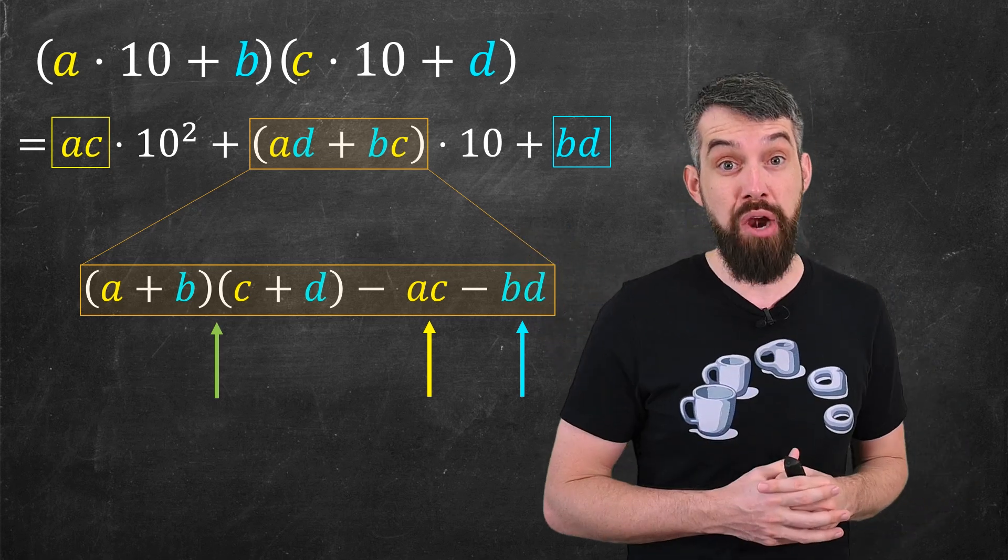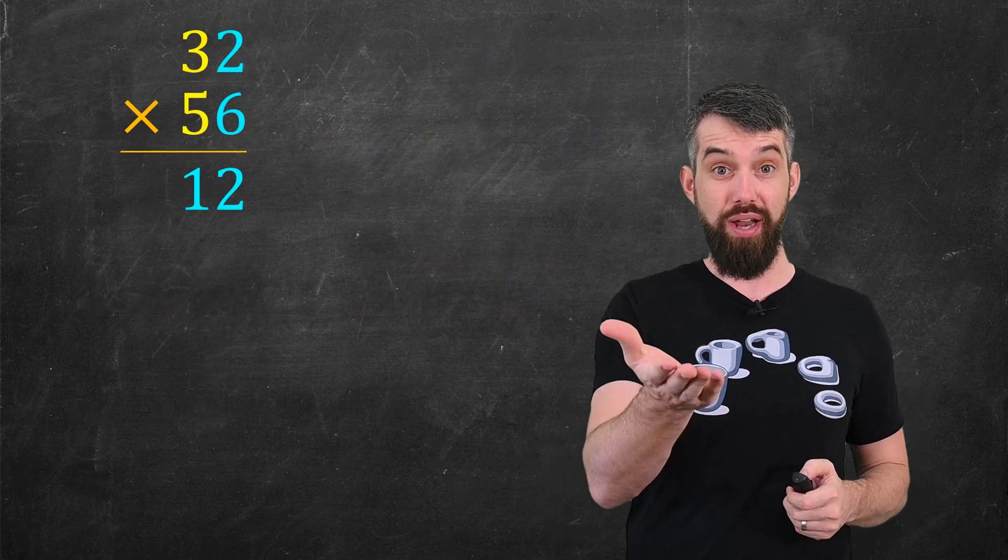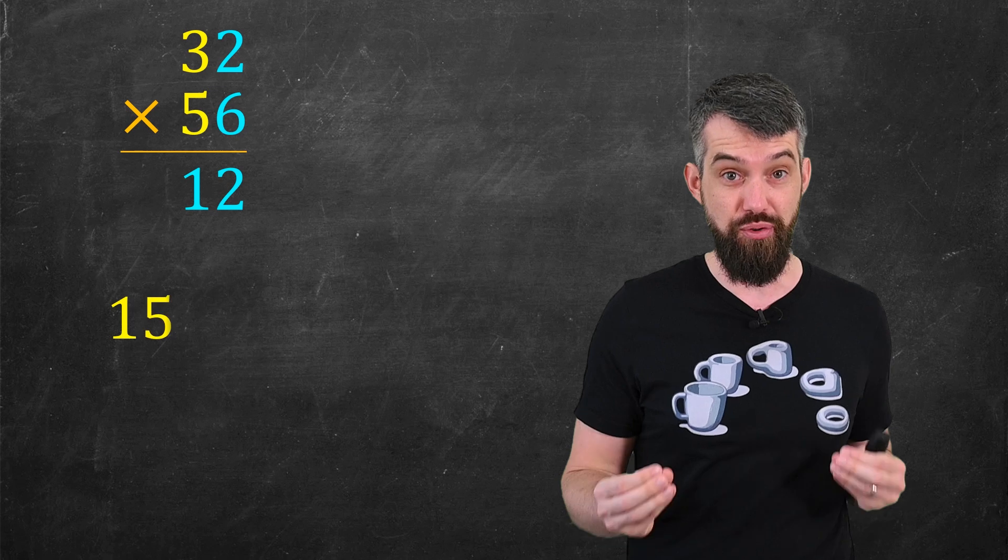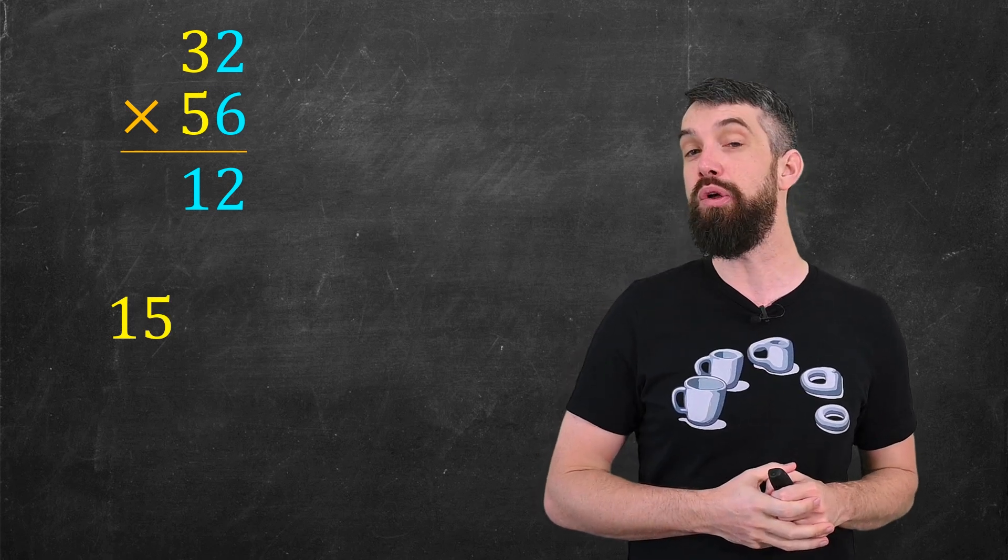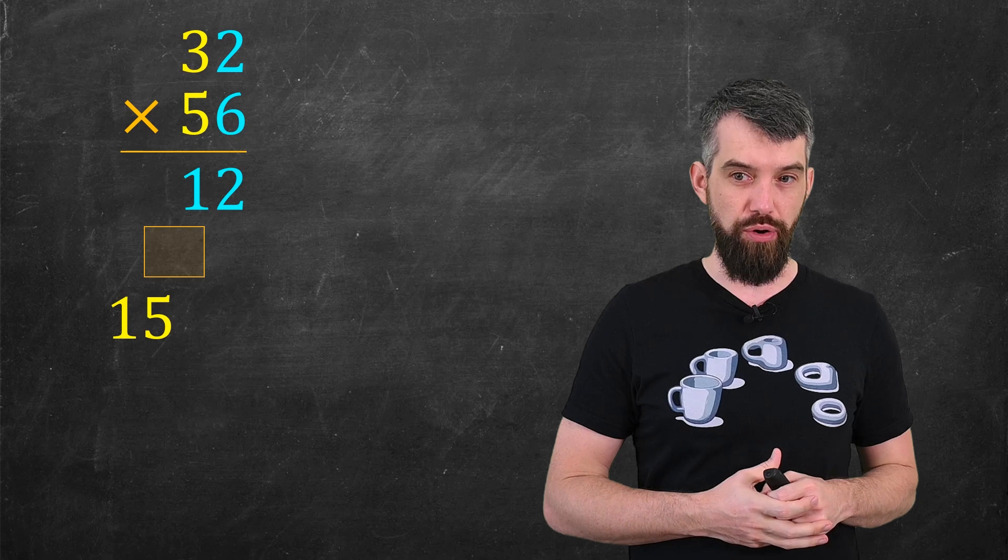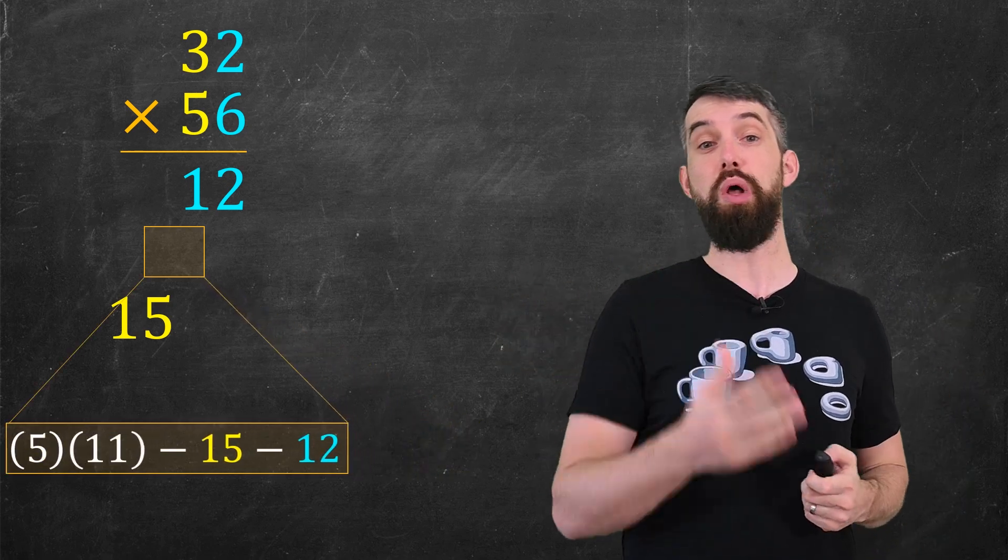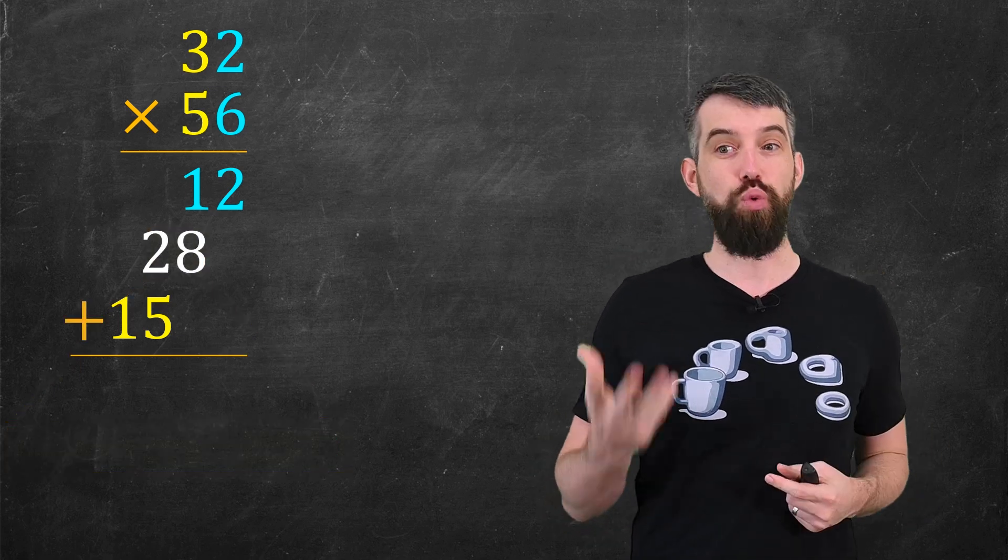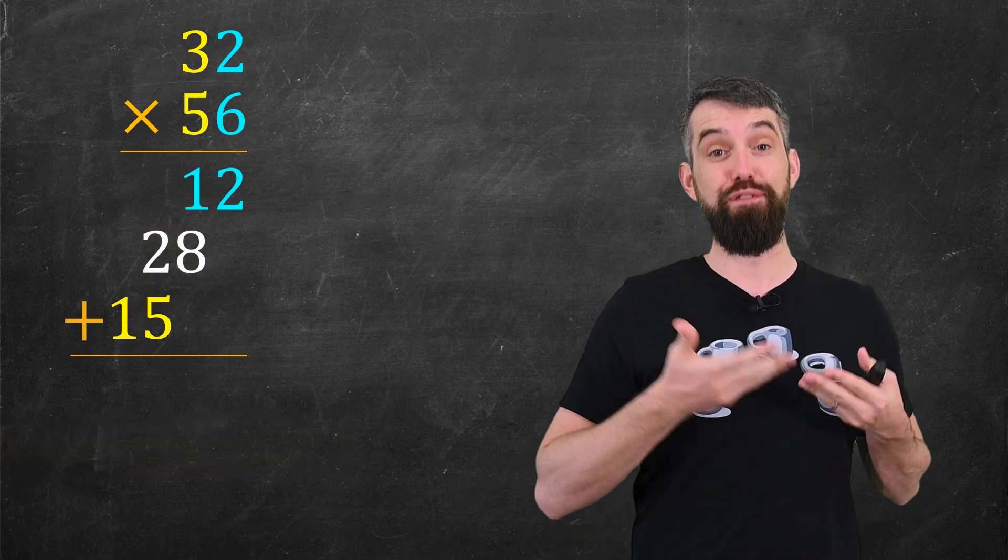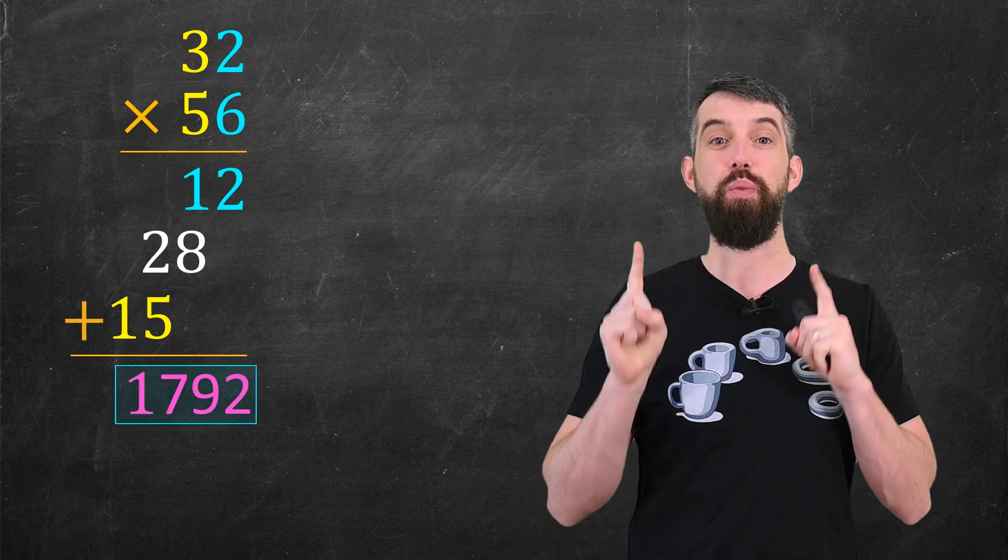Let's run that Karatsuba algorithm out for our 32 times 56. I still have to do the ones, and I still have to do the 100s. The 12 and the 15 are exactly the same, but it's the thing in the middle that's going to change. Via the algorithm I'm going to expand this out, and then if I plug in the numbers, the result that I get is just going to be 28. But indeed 12 plus 280 plus 1500 is the same thing as 1792, the same result we got before.